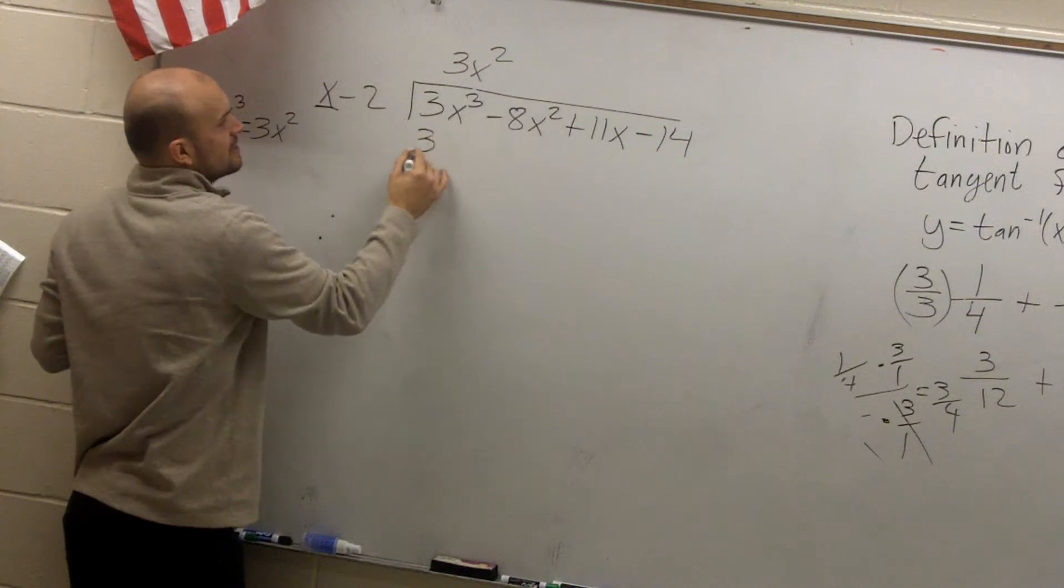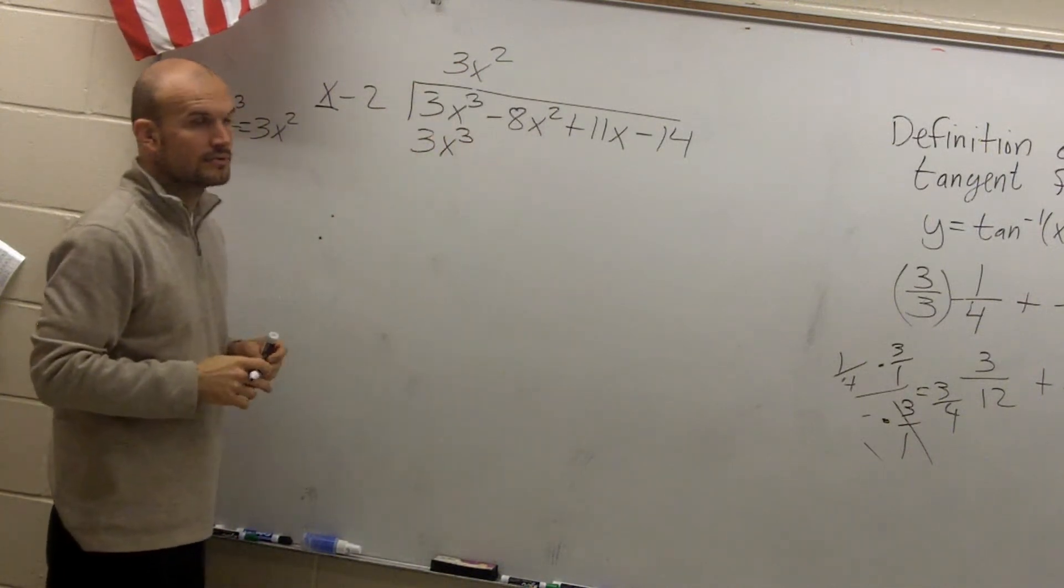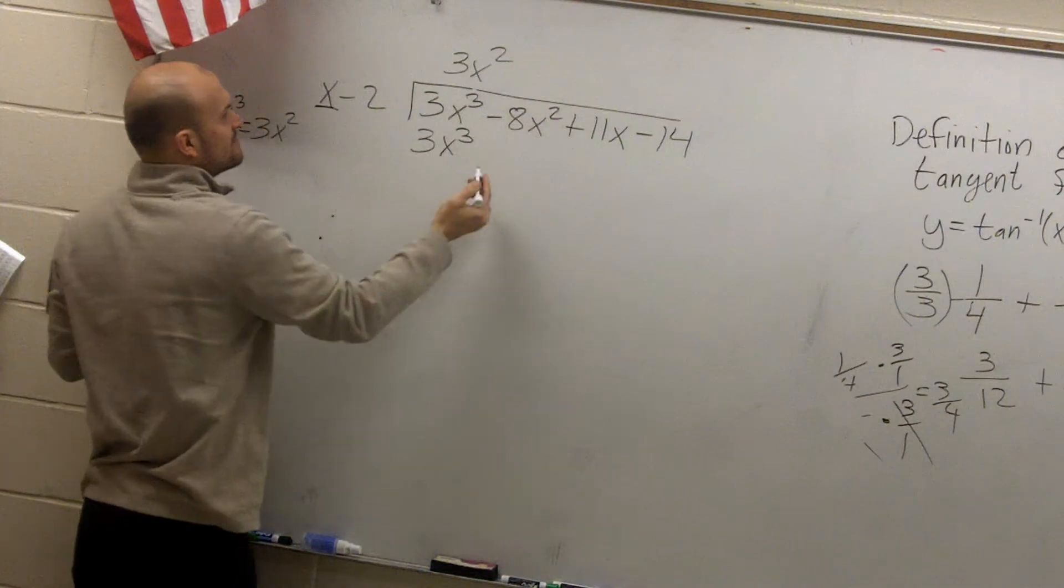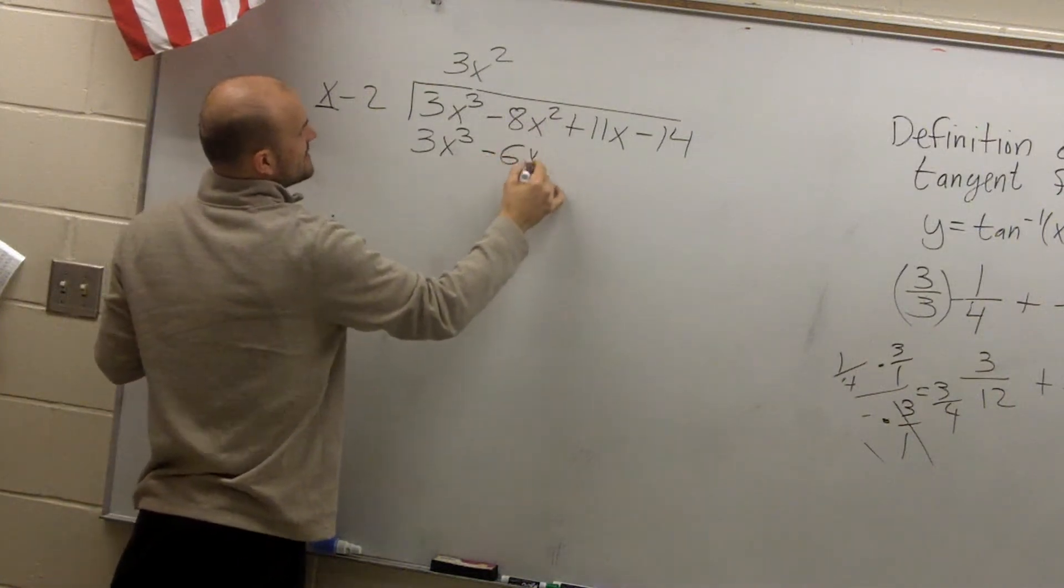3x squared times x, 3x cubed. 3x squared times negative 2 is going to be a negative 6x squared.